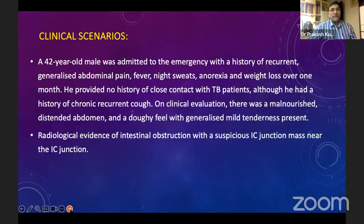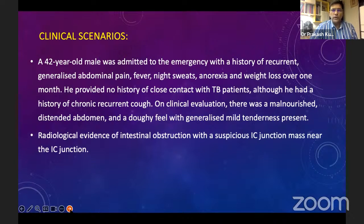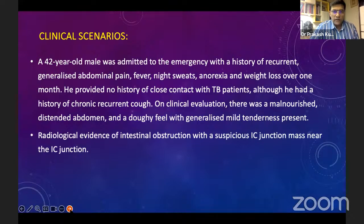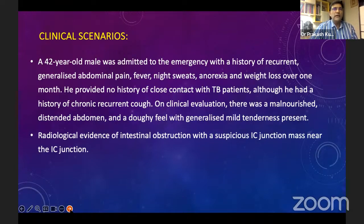Let me start with a clinical scenario — a real case. A 42-year-old male was admitted to the emergency with recurrent generalized abdominal pain, fever, night sweats, anorexia, and weight loss over one month. He had no history of close contact with tuberculosis patients, although he had chronic recurrent cough. On examination, there was a distended abdomen with generalized mild tenderness. Radiologically, there was evidence of intestinal obstruction with multiple air-fluid levels and a suspicious mass near the ileocecal junction.